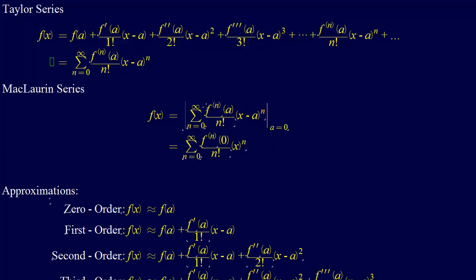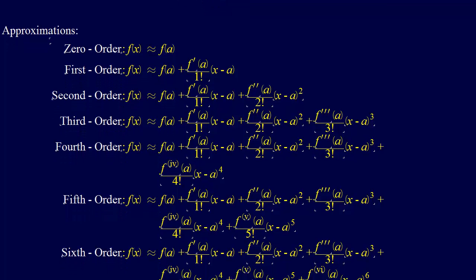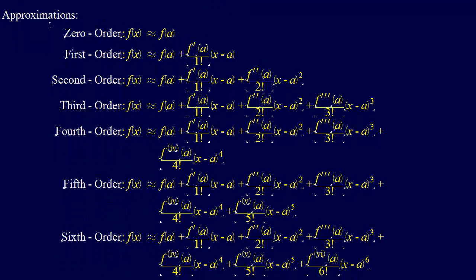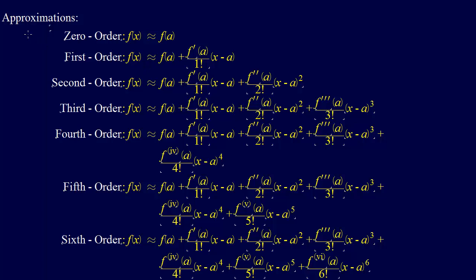So the Taylor series and then the special case of the Maclaurin series. Again, we have our approximations with increasing order of approximation. As we add terms, our approximation, if the series converges, becomes better and better. Our zero order approximation is f of a, as I showed you before. Our first order approximation is f of a plus f prime of a over 1 factorial times the difference between x and a.